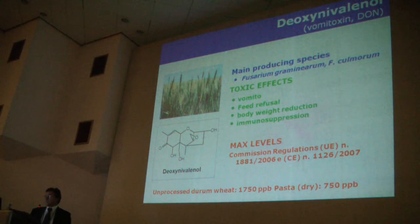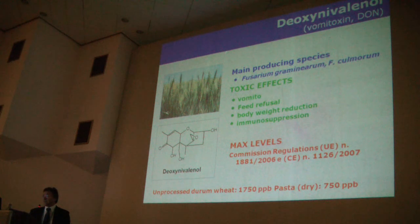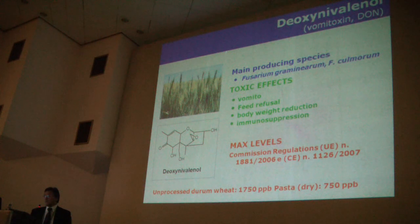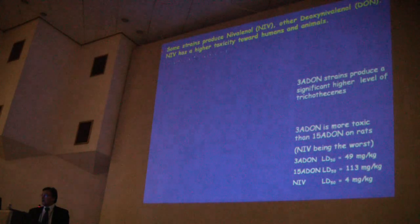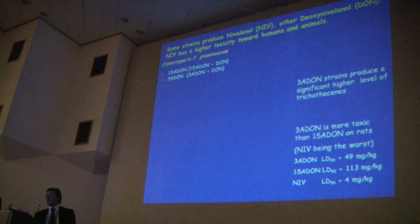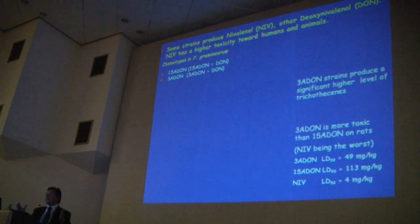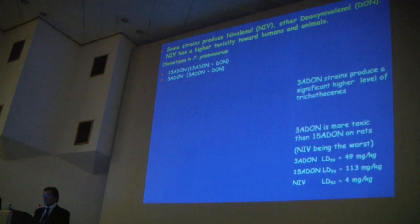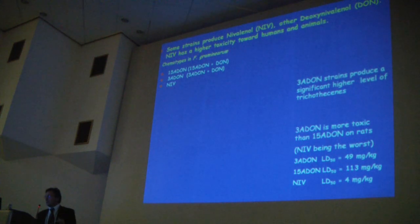Deoxynivalenol is regulated by the European Commission, and the maximum tolerated level for Europe is 1750 ppb. Fusarium species are known to produce different chemotypes: 15-acetyl deoxynivalenol, 3-acetyl deoxynivalenol, or nivalenol can occur within these species.